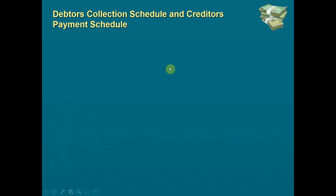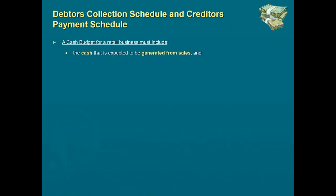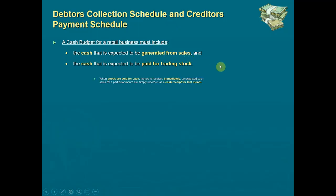This lesson covers the debtors collection schedule and the creditors payment schedule. A cash budget for a retail business must include the cash expected to be generated from sales and the cash expected to be paid for trading stock — the first being receipts and the second being cash payments.